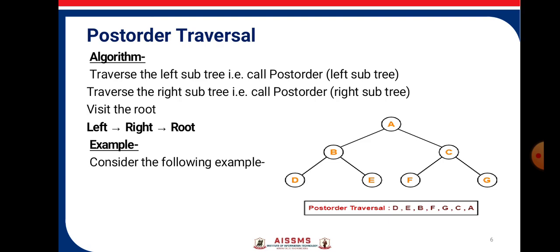Post-order traversal. The algorithm states: traverse the left subtree called post-order, then traverse the right subtree called post-order, then visit the root. So the sequence is left, right, then root.